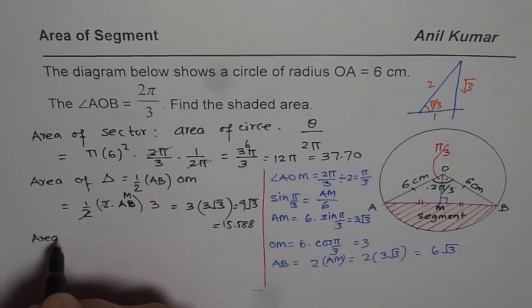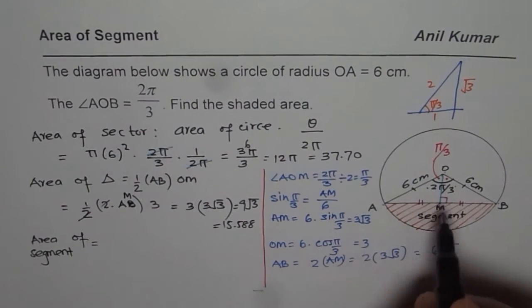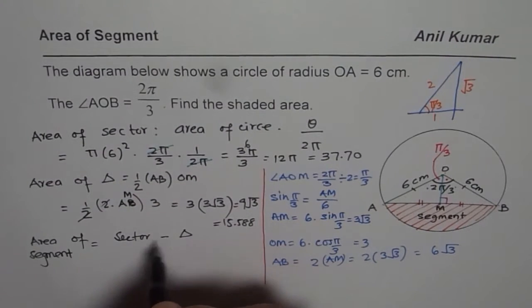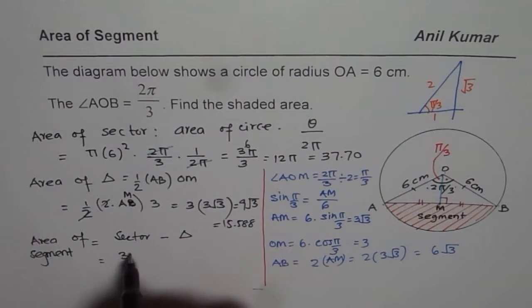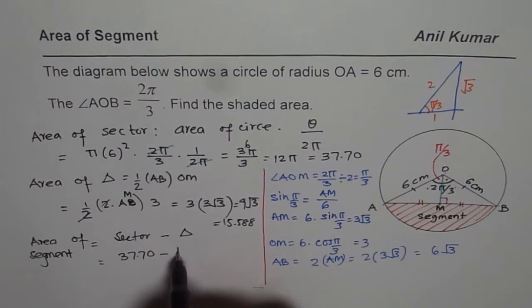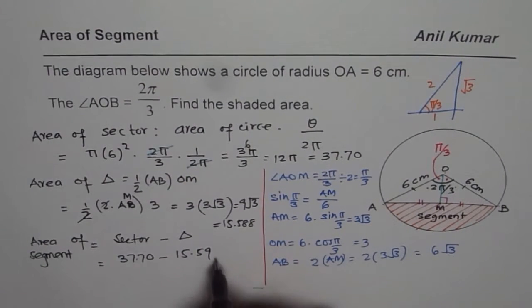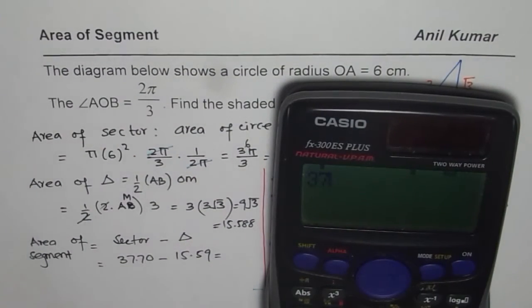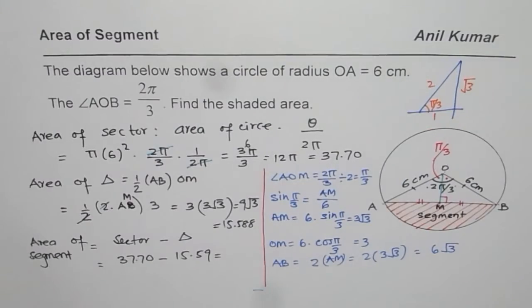So we say area of segment equals to area of sector minus triangle area. So area of sector we found as 37.70 minus this which is 15.59. So it is 37.70 minus 15.59 which is approximately equals to 22.1.